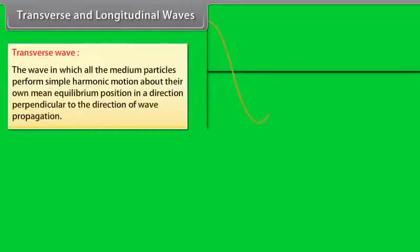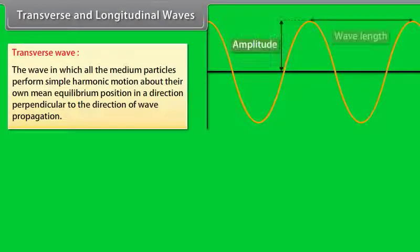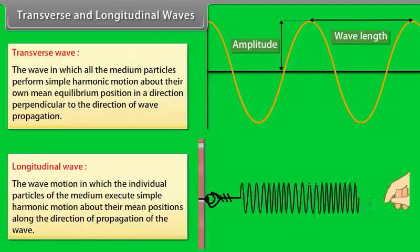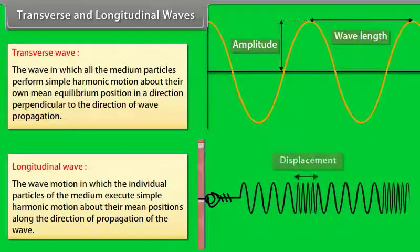A transverse wave is the wave in which all the medium particles perform simple harmonic motion about their own mean equilibrium position in a direction perpendicular to the direction of wave propagation. Longitudinal wave motion is that wave motion in which the individual particles of the medium execute simple harmonic motion about their mean positions along the direction of propagation of the wave.